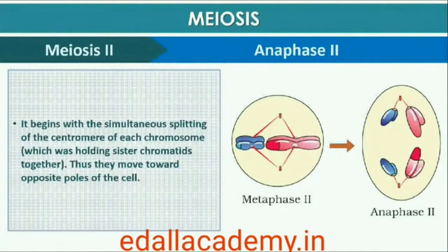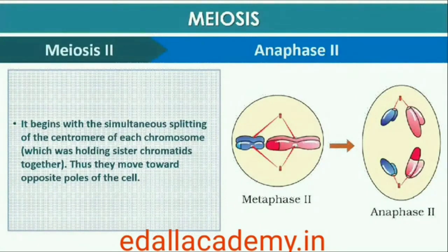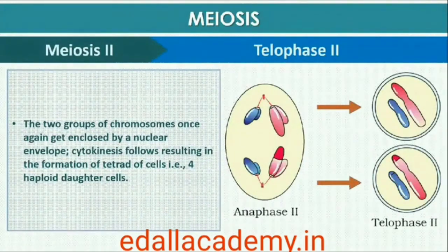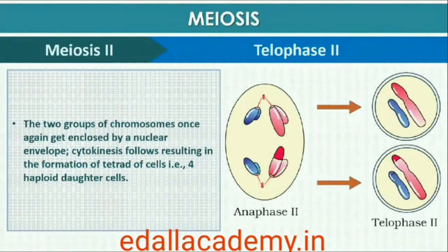Anaphase II begins with the simultaneous splitting of the centromere of each chromosome, which was holding the sister chromatids together, allowing them to move toward opposite poles of the cell. Meiosis ends with Telophase II, in which the two groups of chromosomes once again get enclosed by a nuclear envelope. Cytokinesis follows, resulting in the formation of a tetrad of cells — that is, four haploid daughter cells.